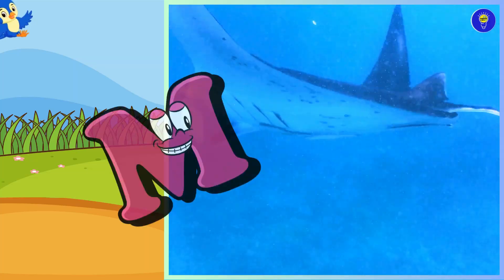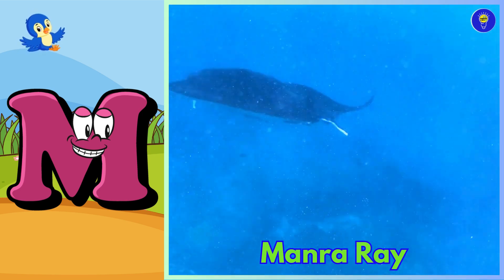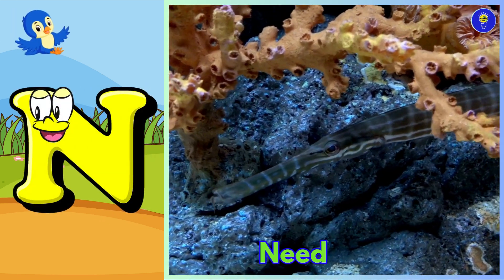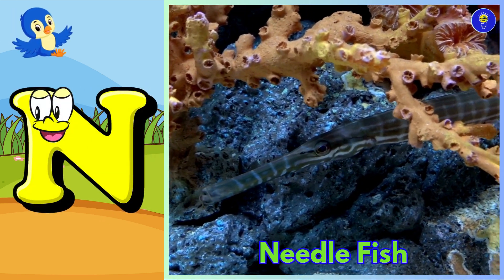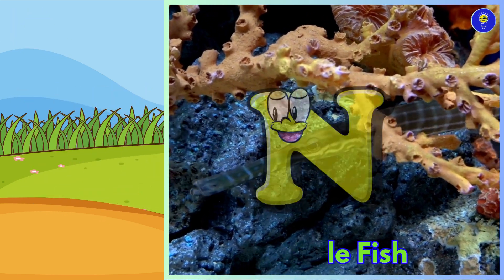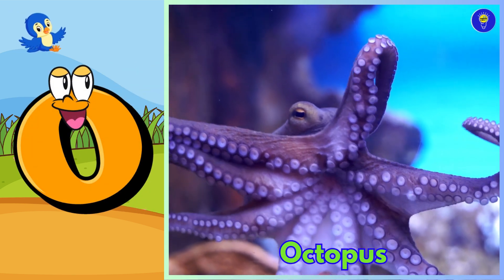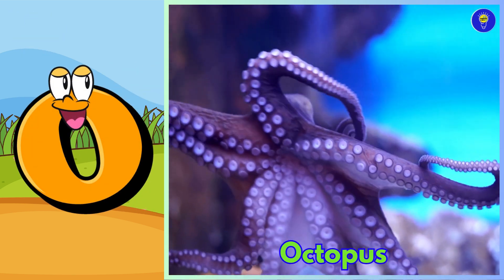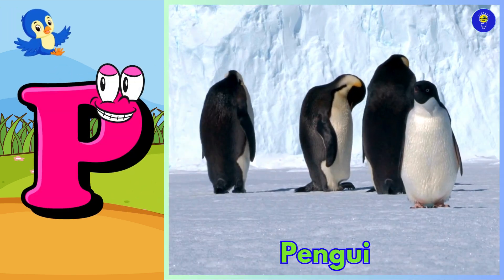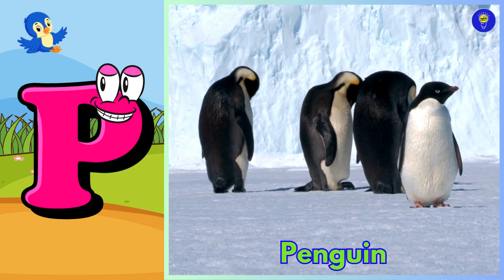M is for manta ray, muh, manta ray. N is for needlefish, nuh. O is for octopus, o, octopus. P is for penguin, puh, penguin.